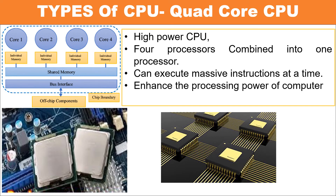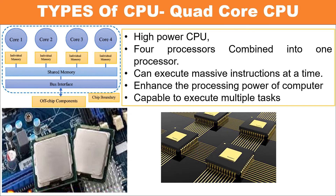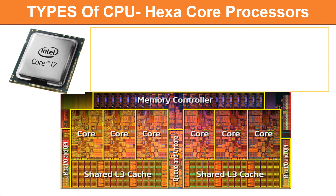The quad core CPU helps enhance the processing power of a computer system. Due to use of a quad core processor, it is capable of executing multiple tasks like playing music, video, word processing, and calculation of mathematical and logical conditions all at once.